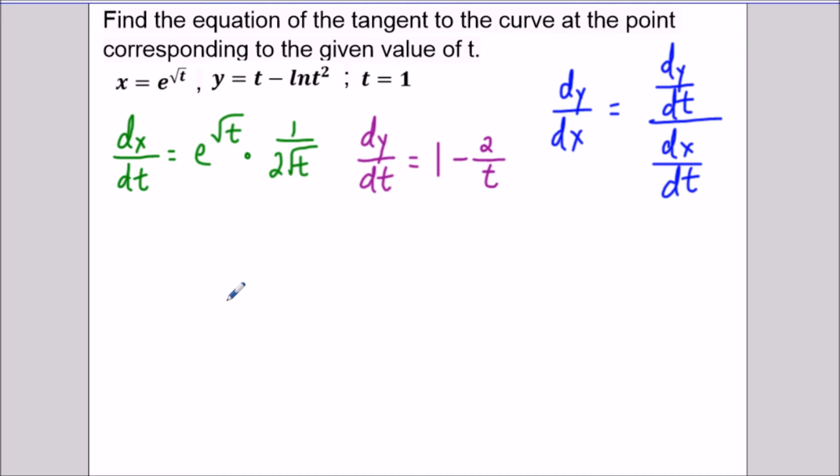So then here same strategy as before. What we're going to do is come up with an expression for dy/dx. And dy/dx we have 1 - 2/t divided by, and now I'm just going to write this as a single expression, this is e^(√t) over 2√t. But now we want to evaluate this derivative specifically at t equals 1 so for this type of question, we don't have to solve just yet for the value of t.